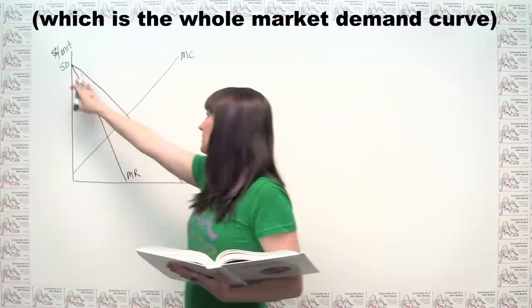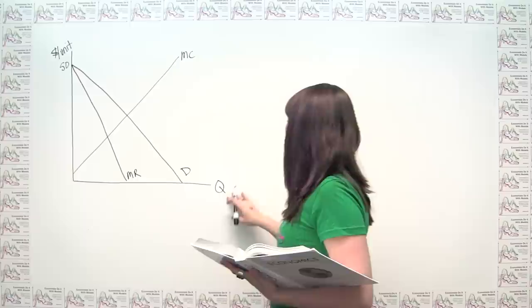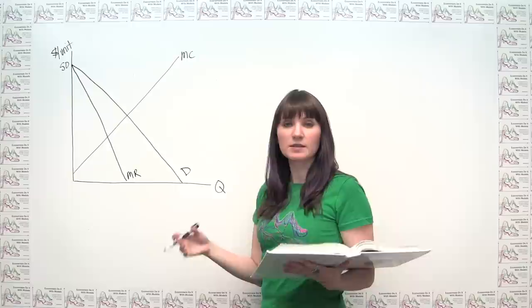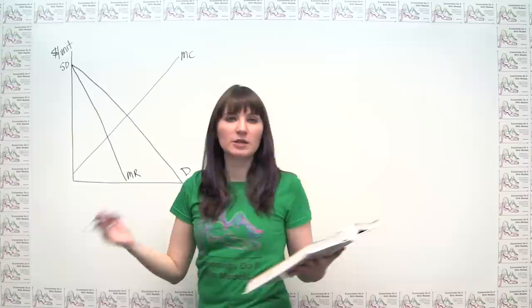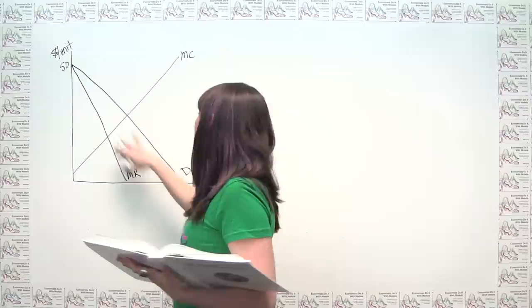The problem begins by giving us a graph that has marginal costs, the monopolist demand curve, the monopolist marginal revenue curve, and quantity on the horizontal axis. I put big Q here because it's market quantity — because there's only one company in the market, that's what a monopoly is.